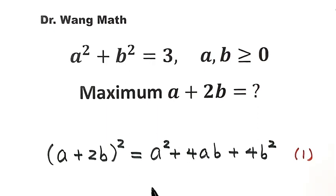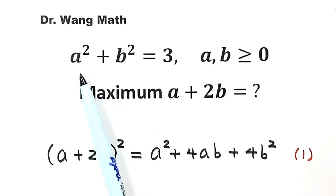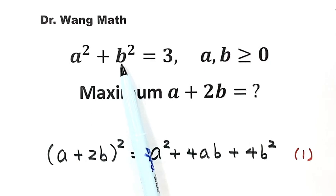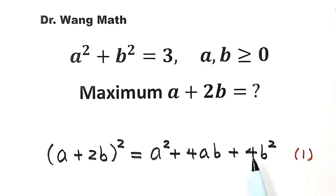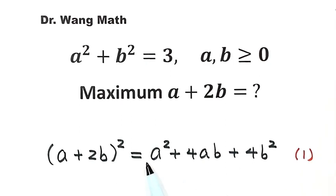But we still cannot use this result directly. The reason is that for a squared and b squared, they have the same coefficient of 1 in the constraint, but here the coefficients for a squared and b squared are not the same — there's a 4 for b squared and a 1 for a squared. So what can we do next?